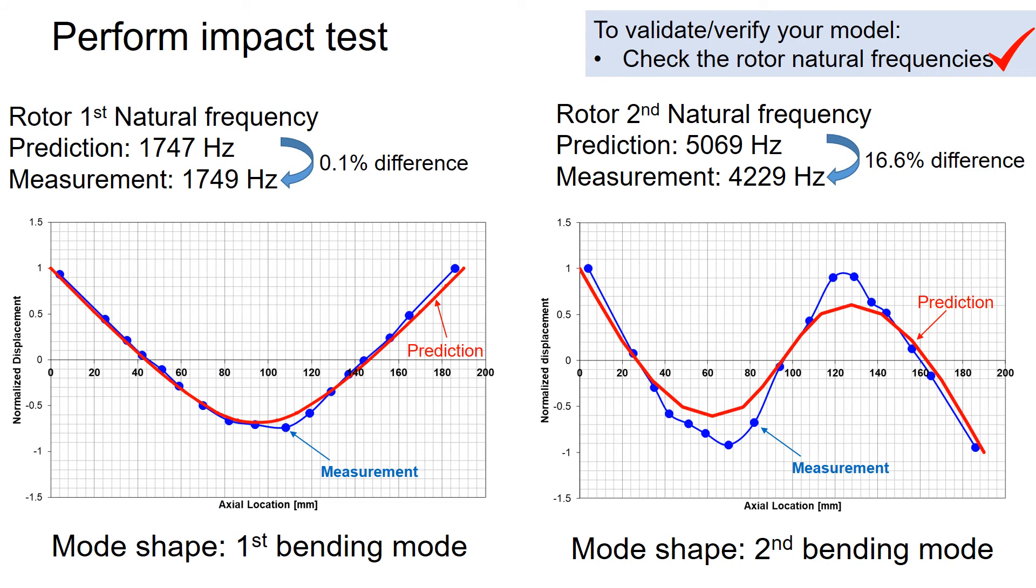Here is the result from the impact test after processing the test data. The measurement of the rotor first natural frequencies matches well with the prediction. The mode shape of the first natural frequencies also looks very similar to the prediction. On the other hand, the second natural frequencies shows 16% difference between the prediction and the measurement.